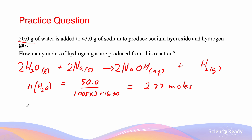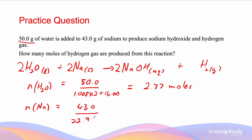Similarly, the number of moles of sodium is going to be equal to 43.0 divided by 22.99, and that will give us a value of 1.87 moles. Since there are more moles of water than sodium, sodium must be our limiting reagent. This means that only a maximum of 1.87 moles out of the 2.77 moles of water are able to react.